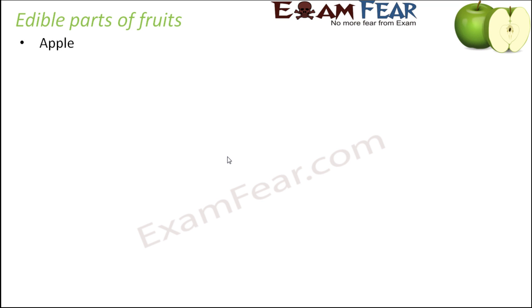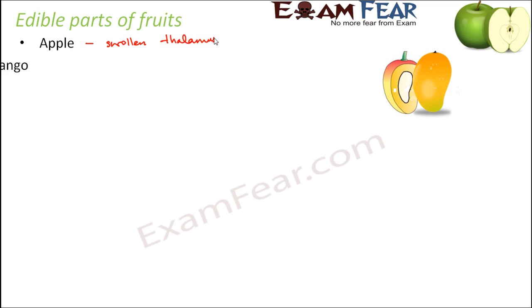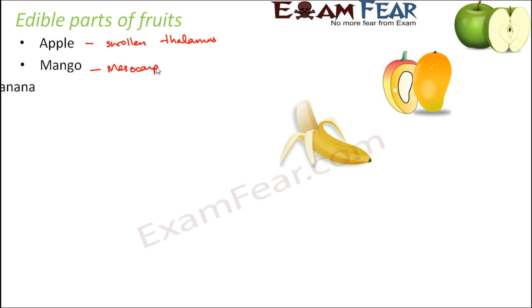Now let us look at the edible parts of different fruits. In apple, the swollen thalamus is the edible part. In mango, the mesocarp is the edible part. In banana, the entire ovary which forms the fruit is the edible part.